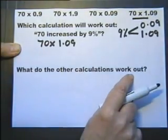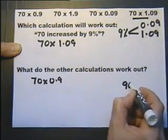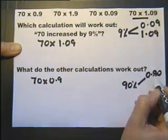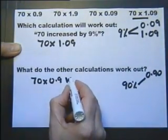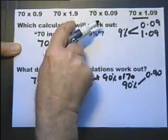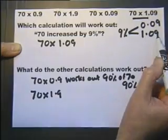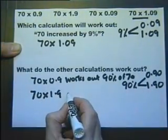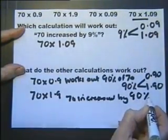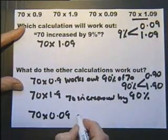What do the other calculations work out? Well let's look at this one. If we consider 90%, multiplying by 0.9 works out 90%, and this is the same as this. So this works out 90% of 70. This one here increases by 90%. So 70 increased by 90%. And this one I've already mentioned works out 9%.